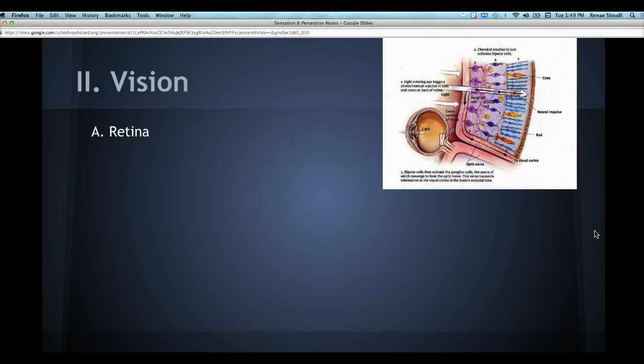So, first of all, your retina, this is after light goes through the other parts of your eye, and it goes back to the back of your eye and goes through the retina to the rods and cones. What are the rods and cones?